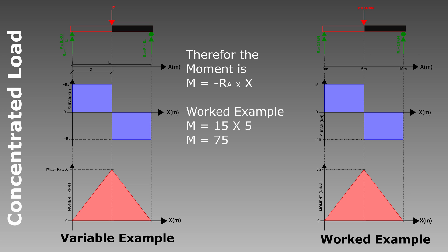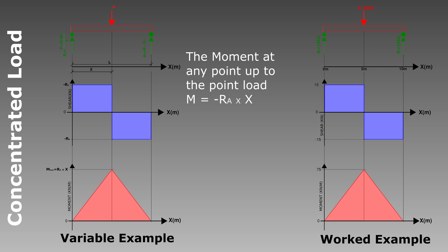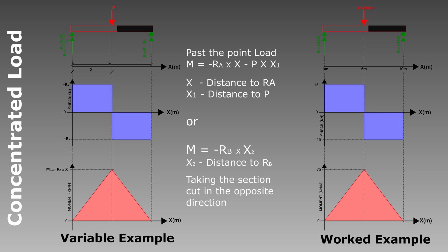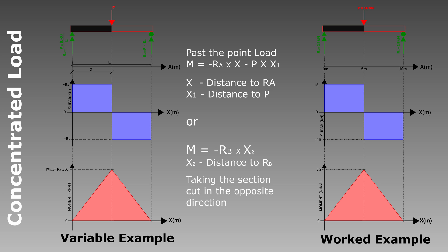The only force to the left is RA, so the bending moment at this point is RA times x. That section cut could be taken at any point along the beam — it would just be the reaction force times the distance. Past the point load, we can instead look to the right of the section cut, where the only force is RB. We then use the same equation but with RB, again giving a straight line to the support. A concentrated point load therefore creates a triangular shape in the bending moment diagram, and the peak moment occurs where the shear force diagram crosses zero.